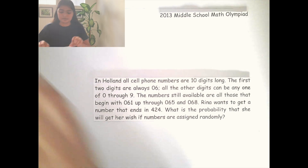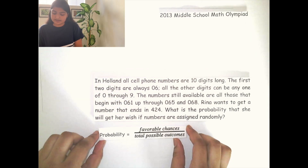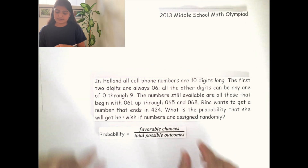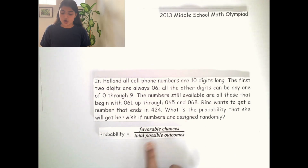Before we jump into this question, it's important to understand what probability is. Probability is the likelihood or chance of something occurring. It can be calculated through a fraction — the number of favorable outcomes over the total possible outcomes.